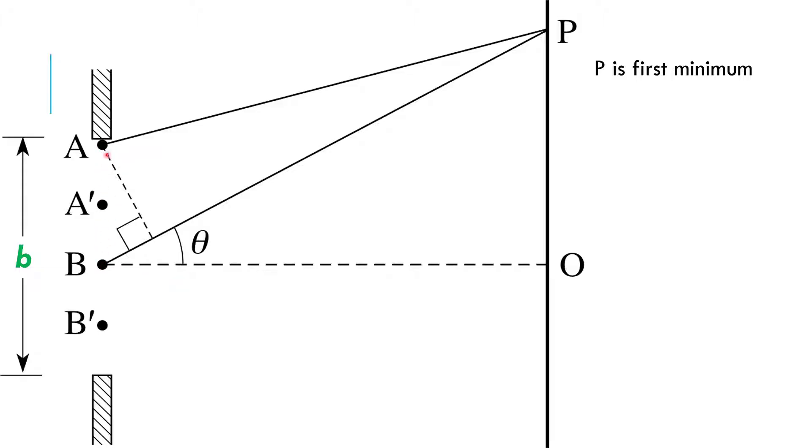If that's the case, then every wavelet will have a buddy halfway down the slit that it interferes with. So, for example, A prime, maybe a quarter of the way down, is going to interfere with B prime, maybe three quarters of the way down, and they'll cancel out.